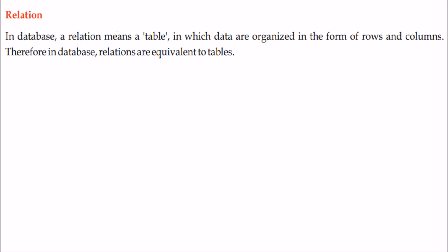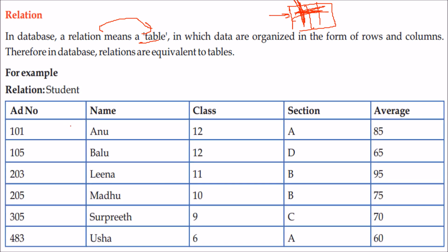A relation is nothing but a table. In relational algebra or RDBMS — relational database management system — the relation simply means a table organized in rows and columns. For example, there is a relation or table called 'student.' This student table has 5 attributes or columns: admission number, name, class, section, and average.